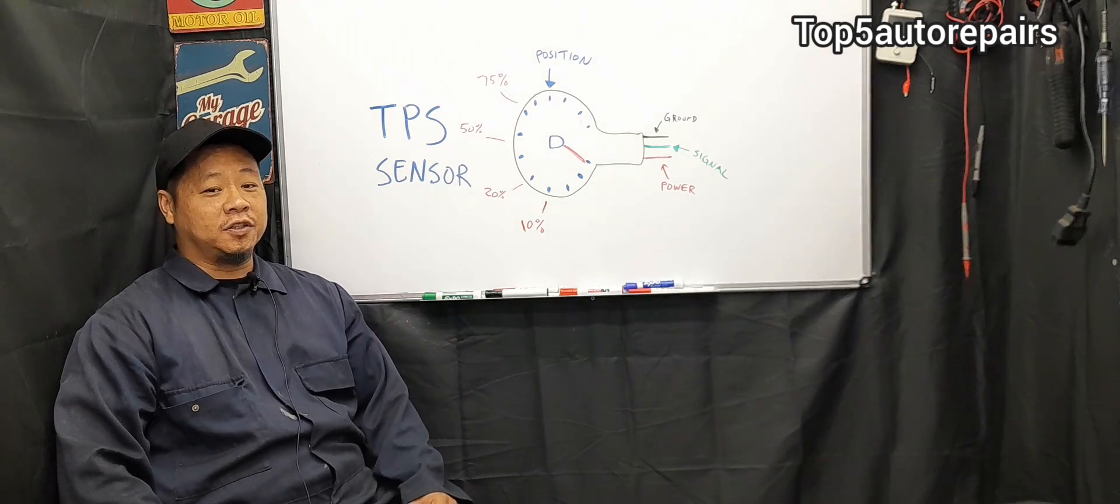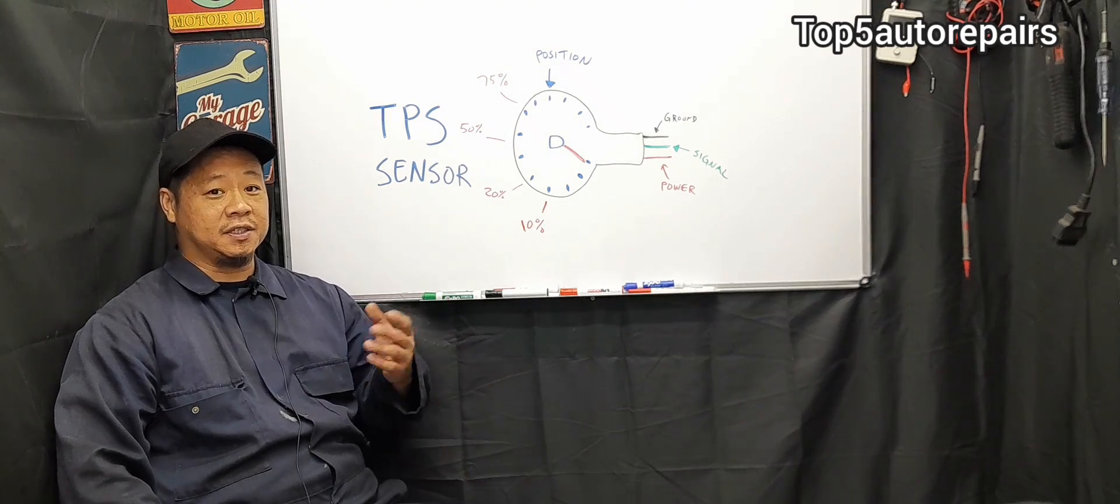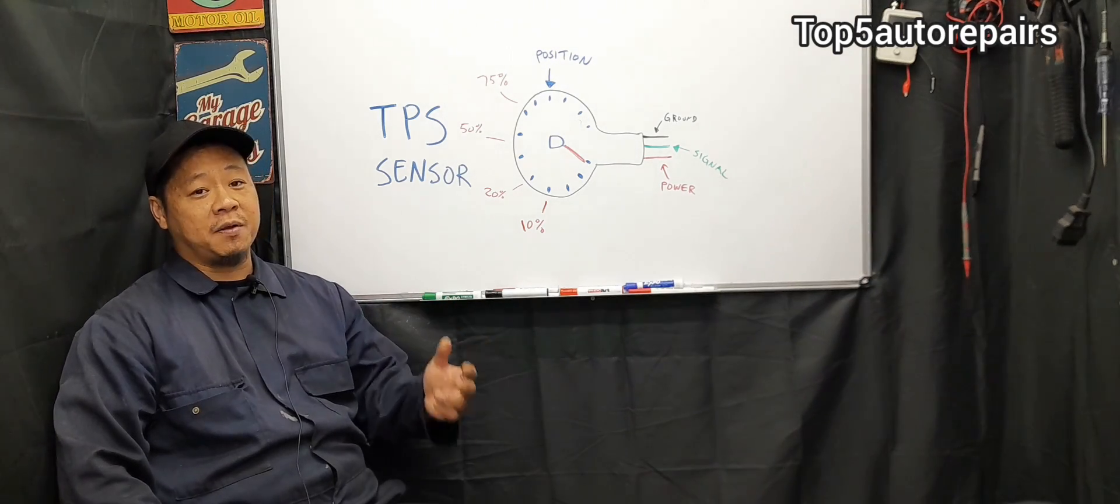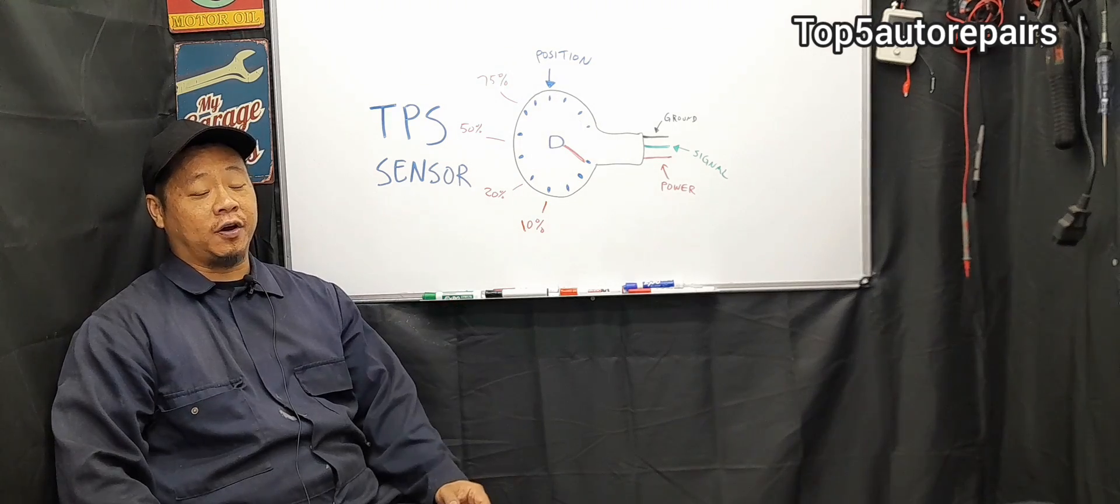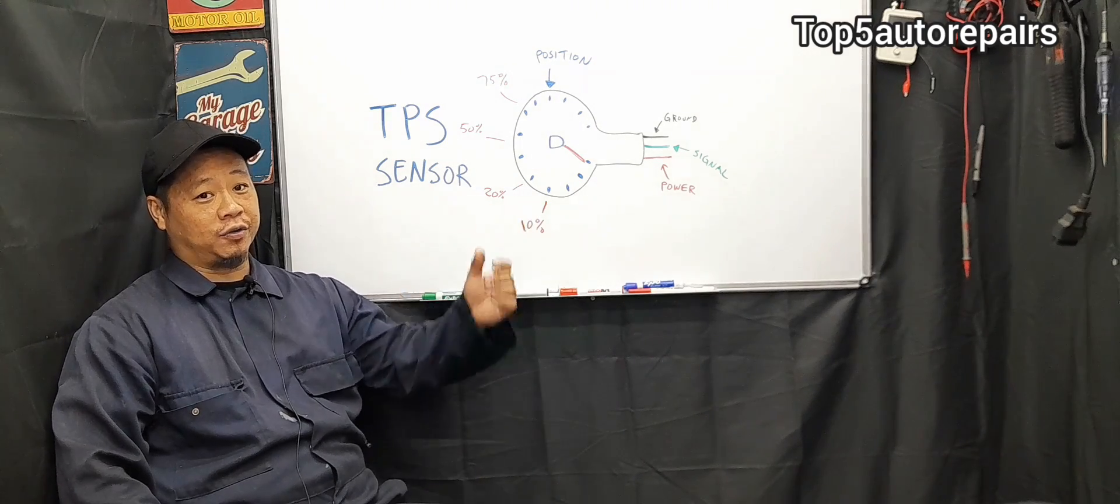The TPS sensor, also known as throttle position sensor, is an input sensor and its main purpose is to measure the opening of the throttle plates, throttle valve, or throttle blade.